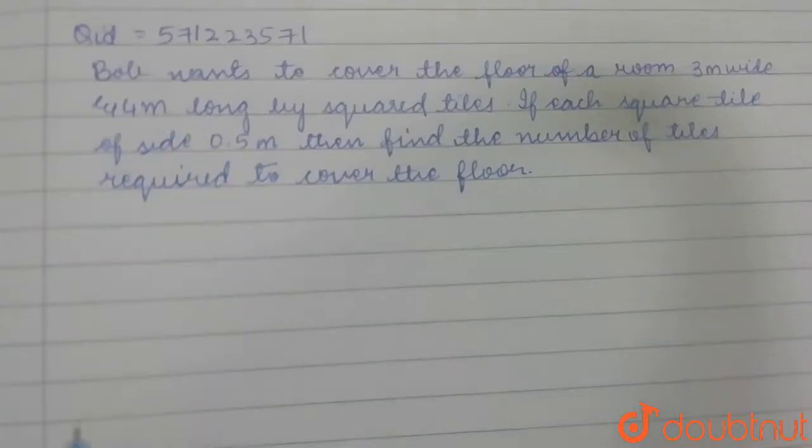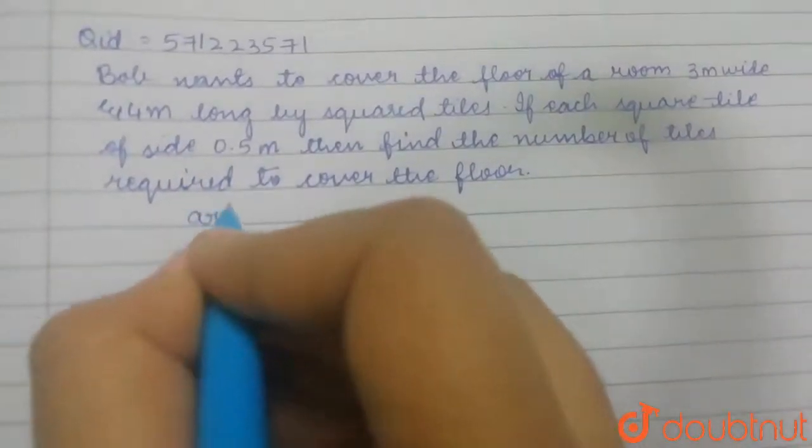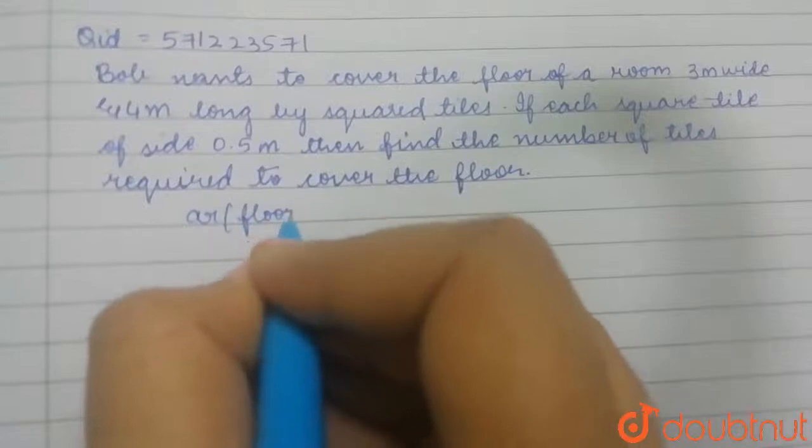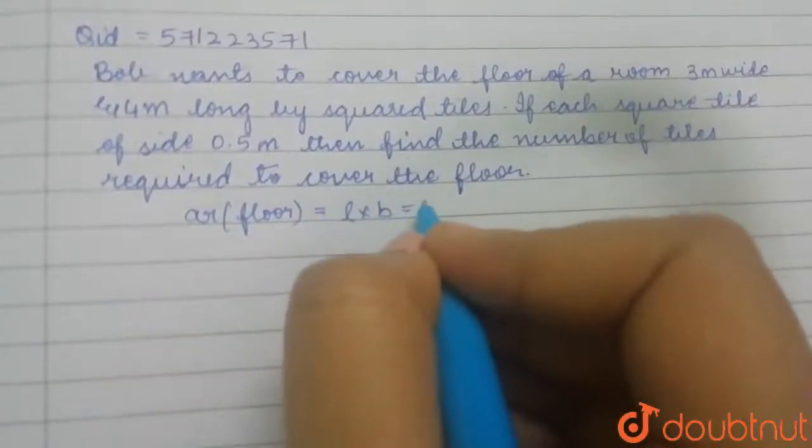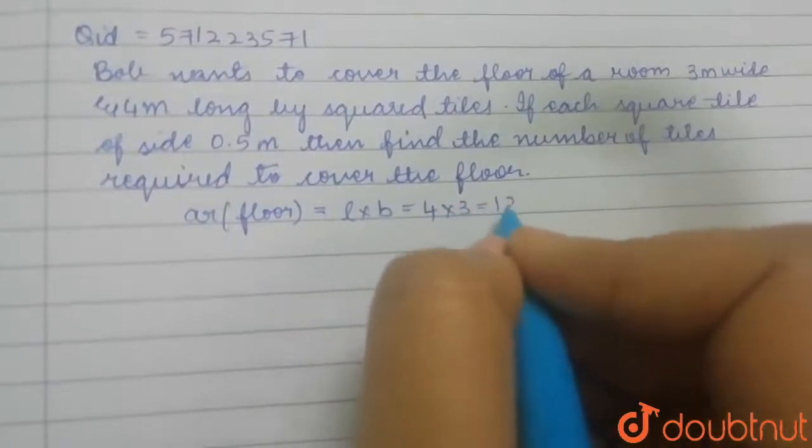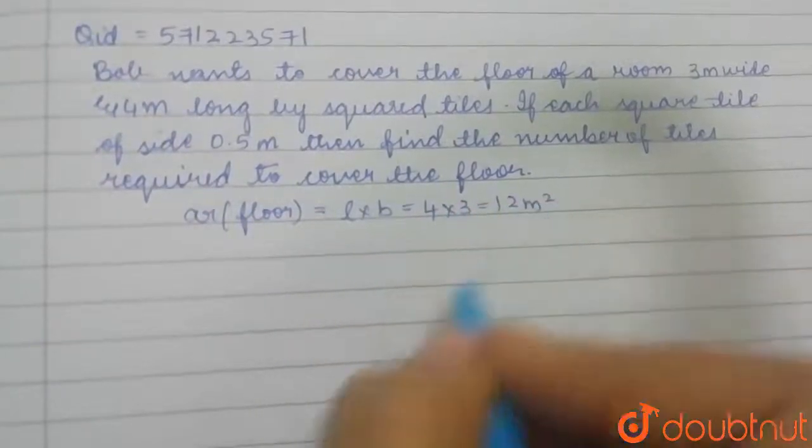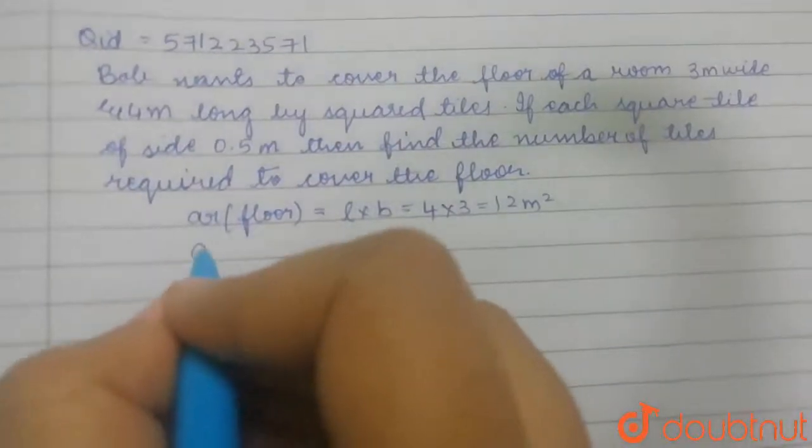So now first let us find out area of the floor, that is a rectangle, that is l into b which is 4 into 3, that is 12 meter square. So now let us find out area of tile.